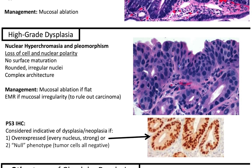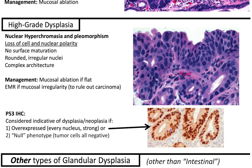High-grade dysplasia features include nuclear hyperchromasia and pleomorphism, loss of cell polarity — for instance, you cannot distinguish the basal layer without the context of the lamina propria. There's no surface maturation, rounded irregular nuclei, pleomorphism, and complex architecture. Management is mucosal ablation if flat, and endoscopic mucosal resection (EMR) if there's mucosal irregularity, in order to rule out carcinoma. P53 IHC is indicative of dysplasia and neoplasia.